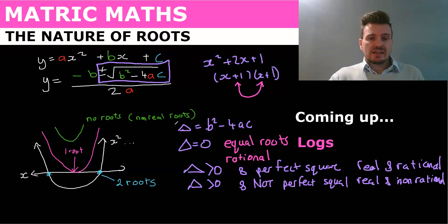And finally, what happens if delta is less than zero? Well if it's less than zero, we have the square root of a negative, and the square root of a negative we cannot find, it does not exist.